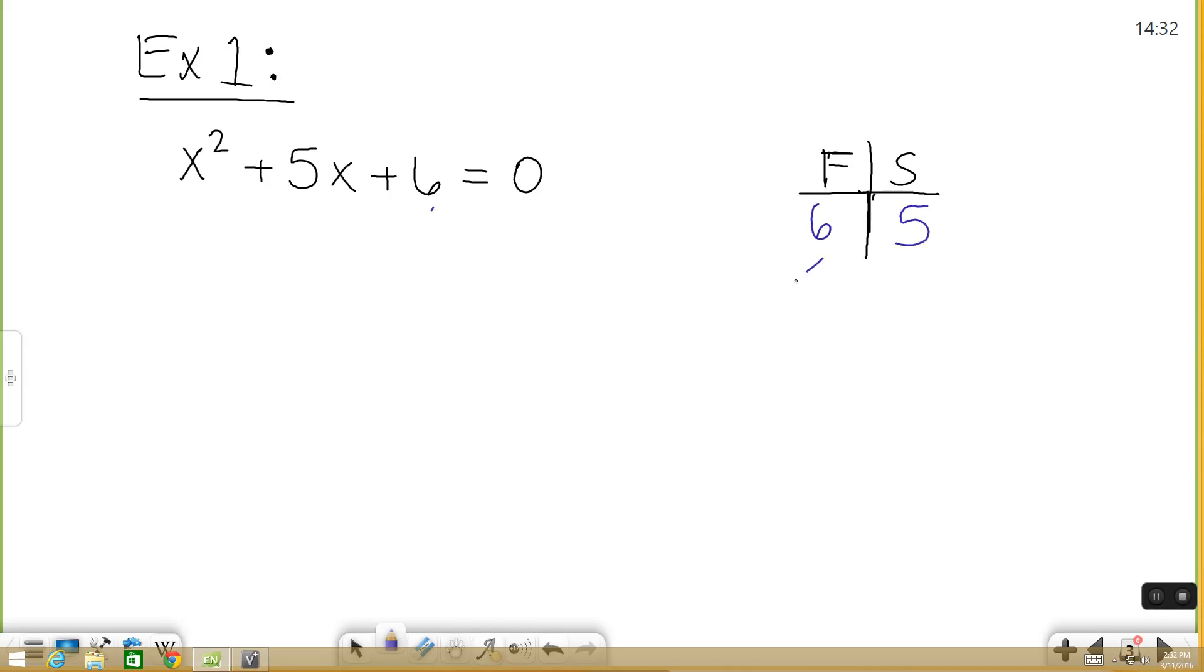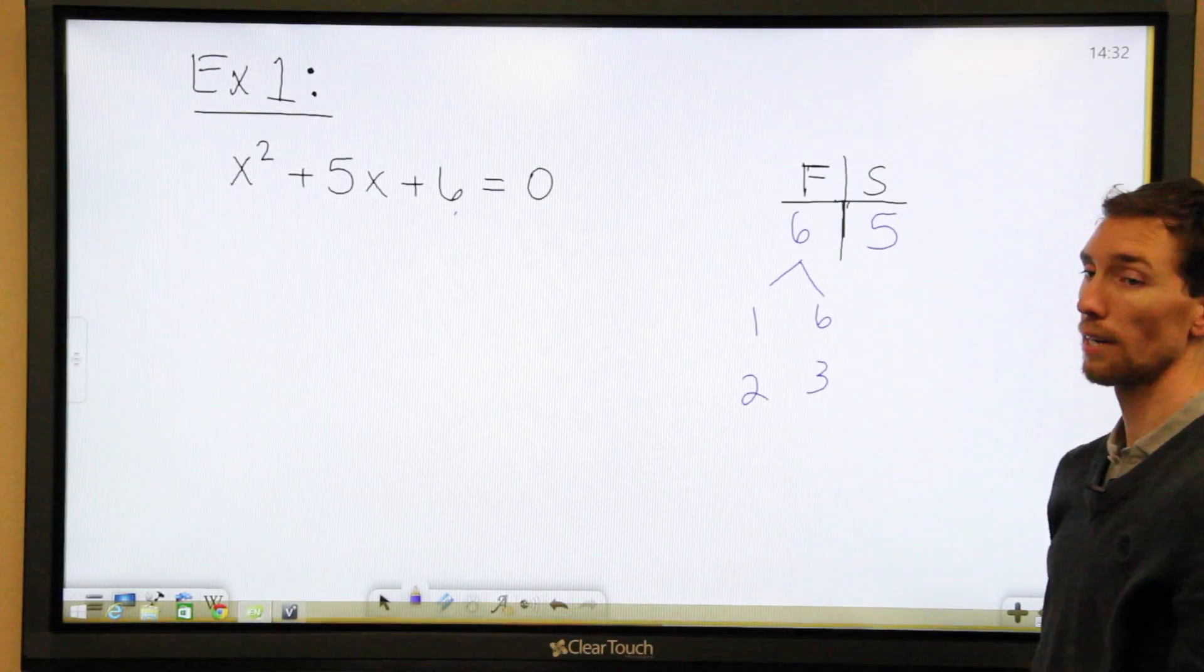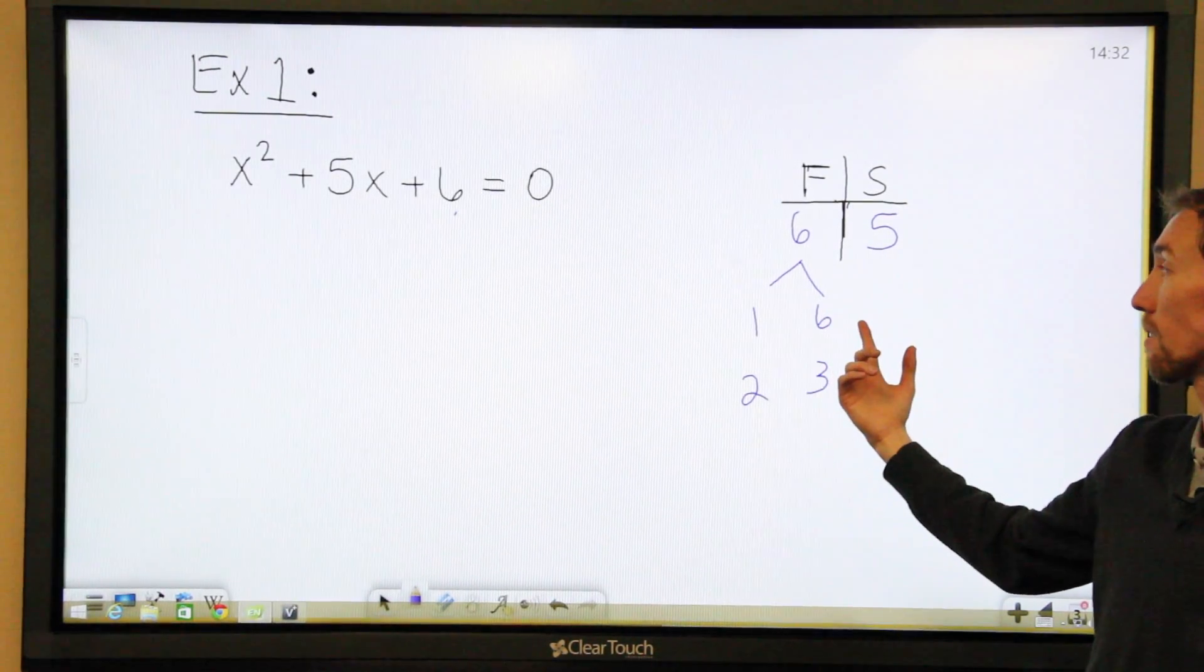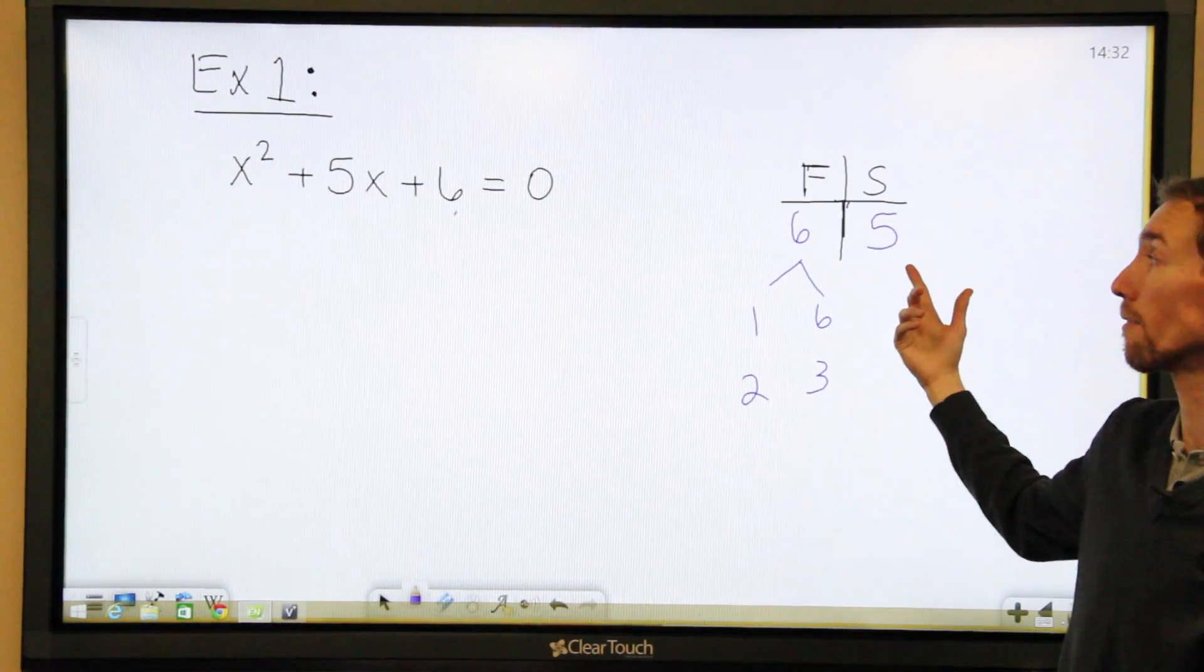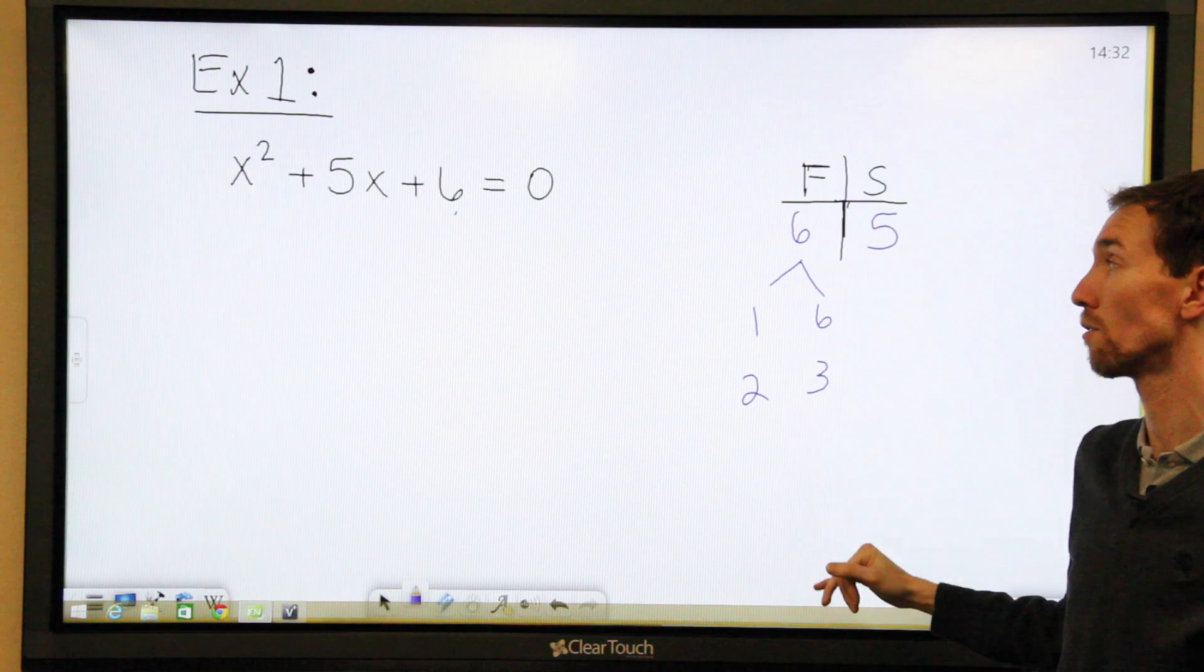Two factors of 6, we have 1 times 6, and we have 2 times 3. Well 1 plus 6 is going to be 7, so we can't use those. 2 plus 3 is going to be 5, which is what we want. So let's use these two numbers.